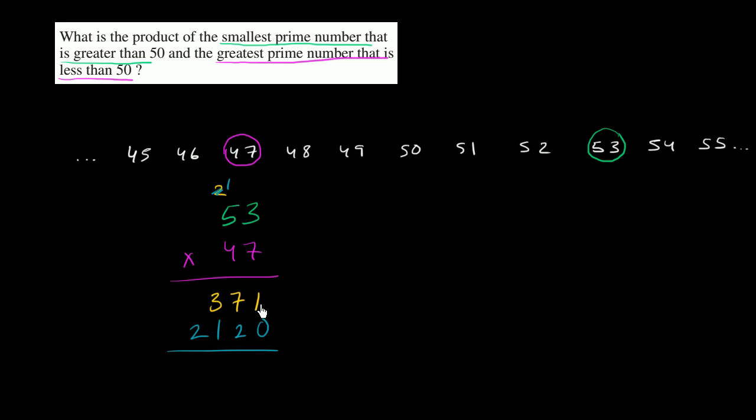And we get 1 plus 0 is 1, 7 plus 2 is 9, 3 plus 1 is 4. And we have a 2, we get 2,491.